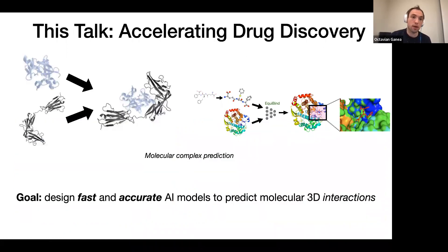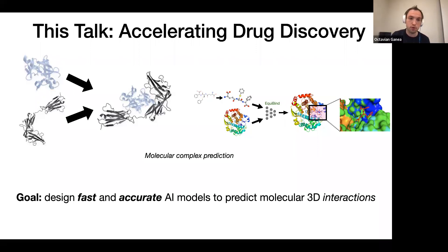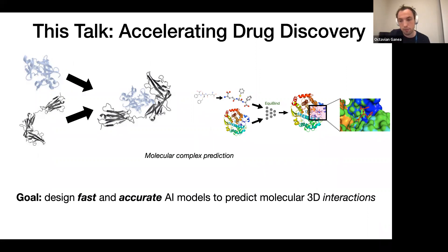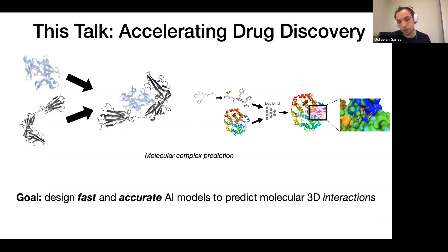In this talk, I want to give an initial solution using deep learning for how we can accelerate the task of predicting complexes of molecules — taking two protein structures as input and predicting how they attach to each other, as well as taking a small drug-like molecule and a protein target and predicting how they bind, where, and in which location, without assuming anything about the binding site.